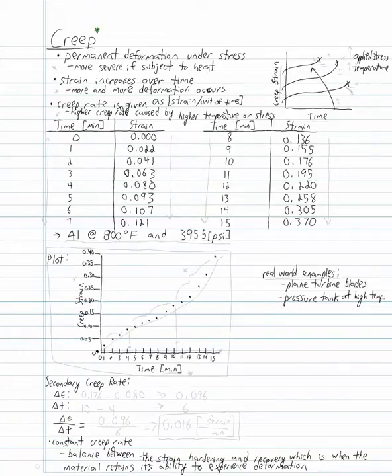Creep failure example problem. Creep failure is defined as permanent deformation under stress and is more severe when subject to heat. There's also a strain increase over time, which means more and more deformation occurs. The creep rate is given as strain divided by a unit of time, and a higher creep rate is caused by higher temperature or stress.